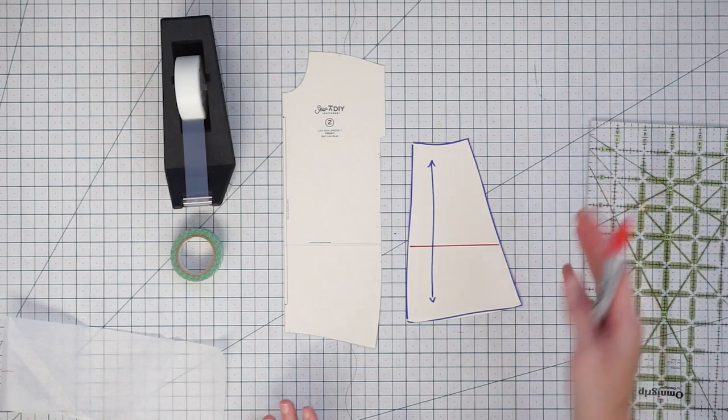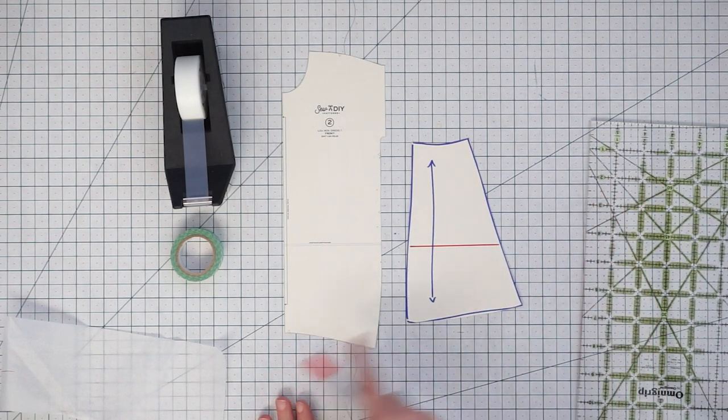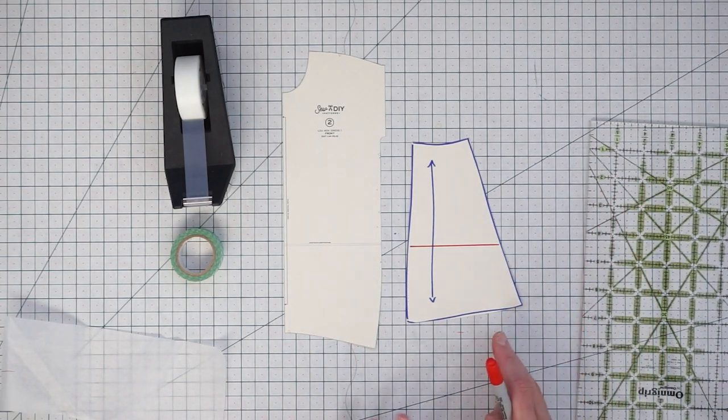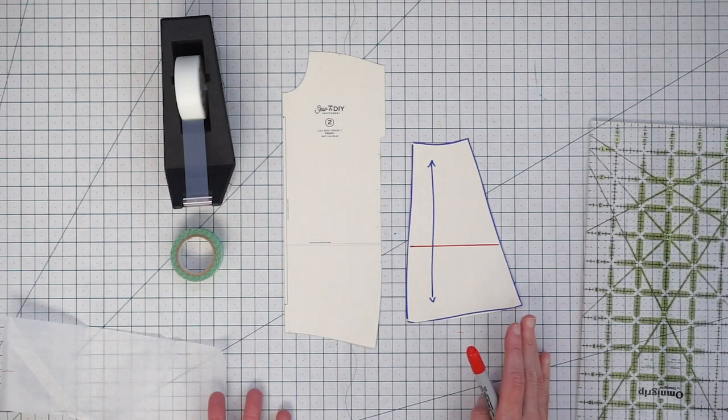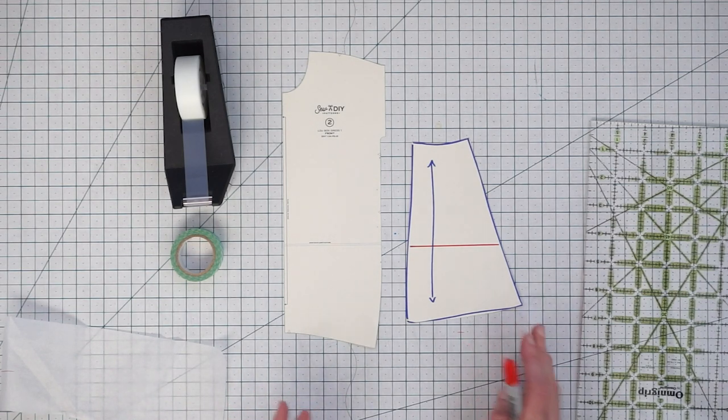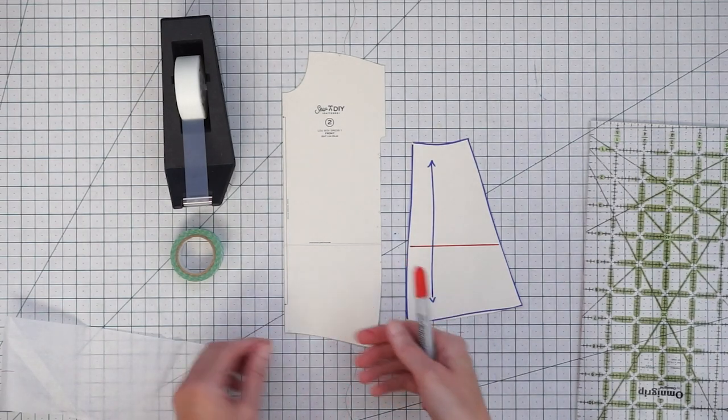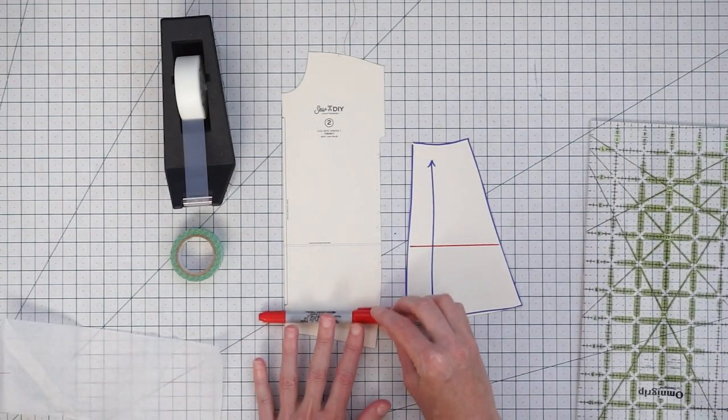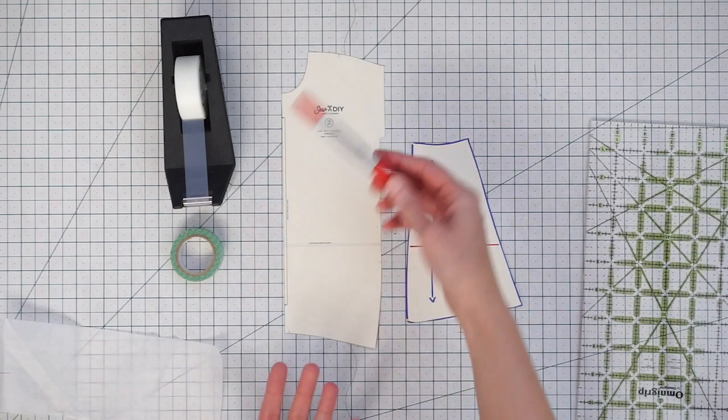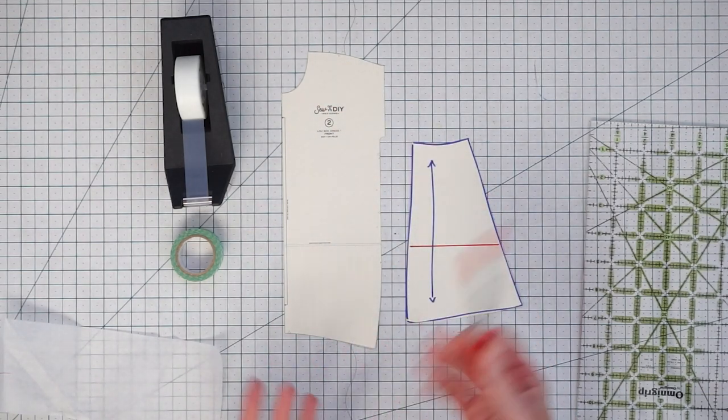So you might be wondering, why can't I just lengthen or shorten from the hem? And sometimes that's going to work and sometimes it's not. If you had just a really straight dress, like if this was just cut off right here and it was straight, then just extending it down straight should be just fine.